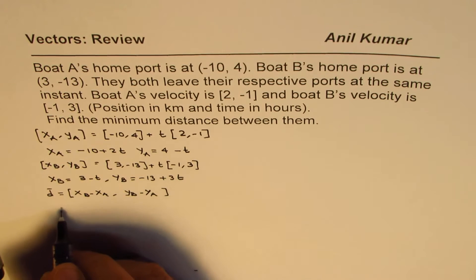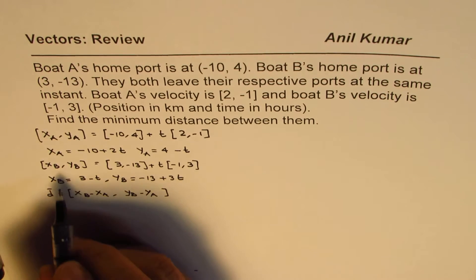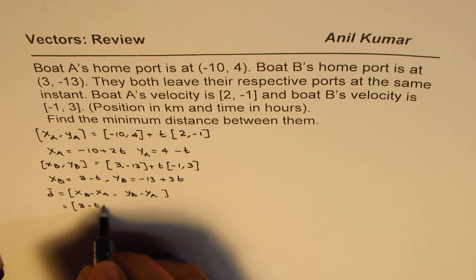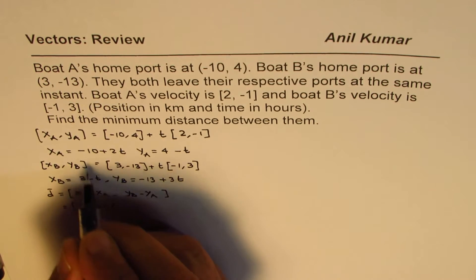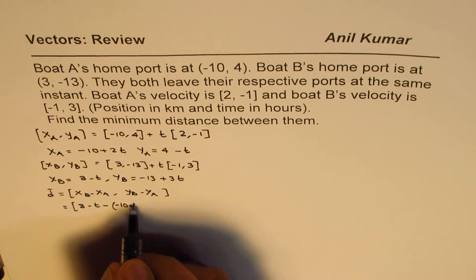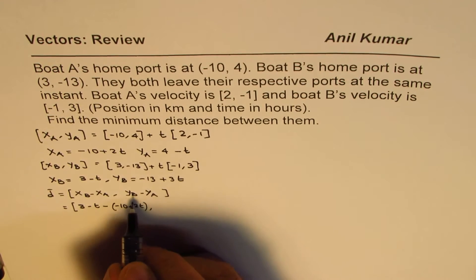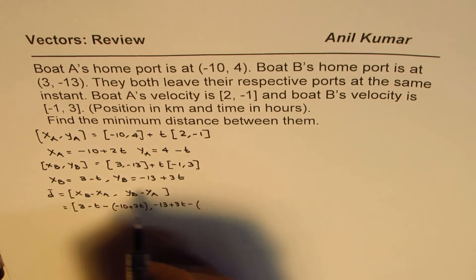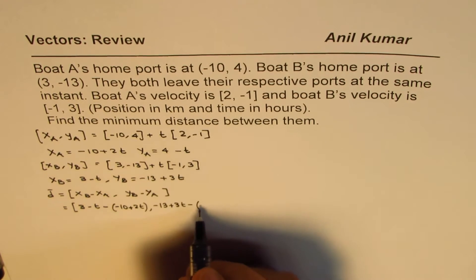So we can now substitute their values. xB is 3 - t minus xA which is -10 + 2t. yB is -13 + 3t minus yA which is 4 - t.